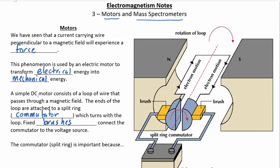There are then fixed brushes, which attach the commutator to some sort of voltage source. Now, let's take a look at how this might work. So, in this example on the side here, you can see we've got magnets with the north and south pole pointing this way.